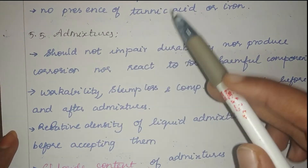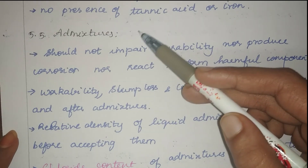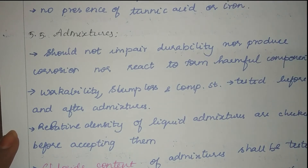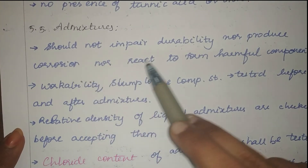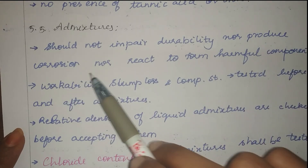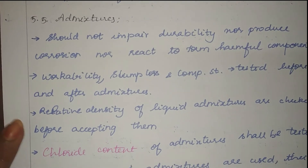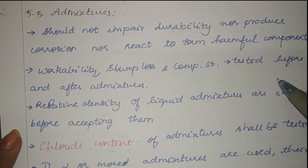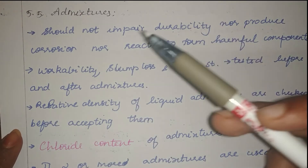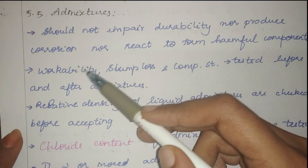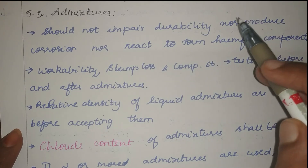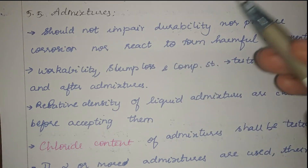Next are chemical admixtures. These include accelerators, retarders, super plasticizers, air-entraining agents, etc. These admixtures should not impact durability, produce corrosion, or react to form harmful components. Parameters like workability, slump loss, and compressive strength must be tested before and after adding the admixtures — for example, plasticizers affect workability and slump loss, while air-entraining agents reduce compressive strength.